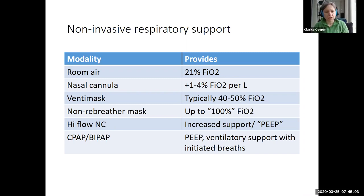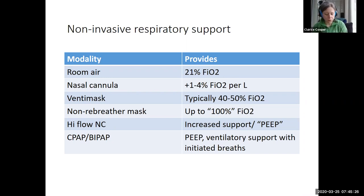If you escalate a patient to a non-rebreather mask, you should highly consider putting them in a different level of care, specifically an ICU setting. High flow nasal cannula is kind of newer on the scene — it didn't even exist when I was a resident in the ICU ten years ago. It provides a lot of extra support, extra oxygenation, a little bit of PEEP, and is actually one of the recommended modes of support for patients with COVID. So that is an important modality to keep in mind.